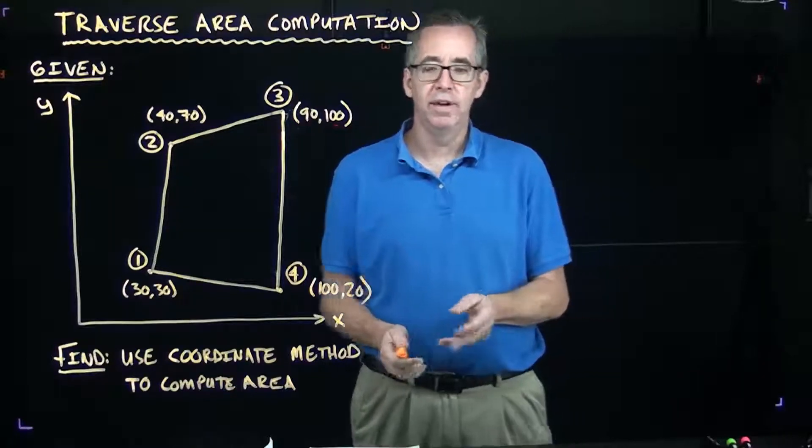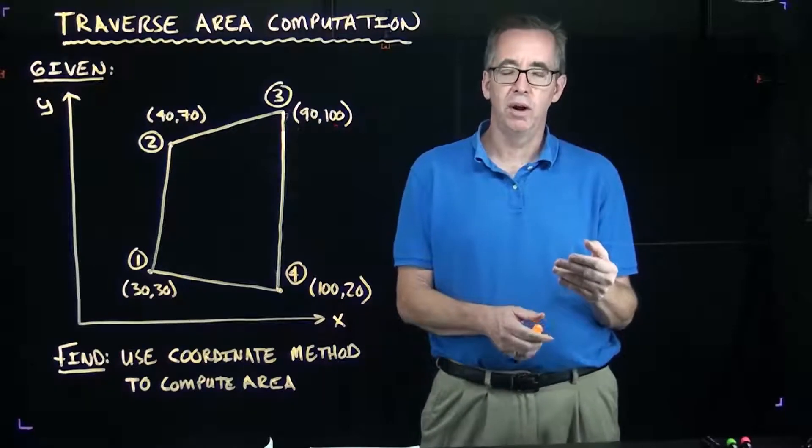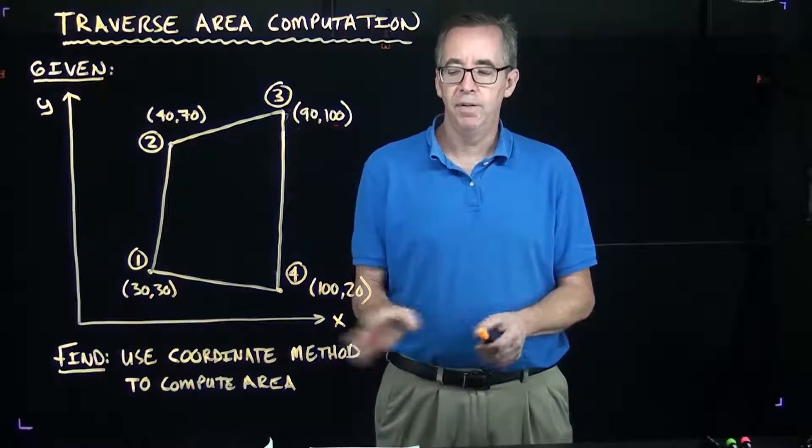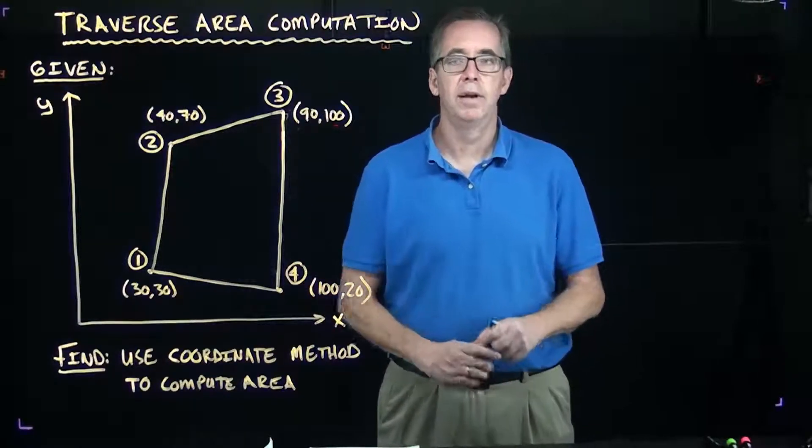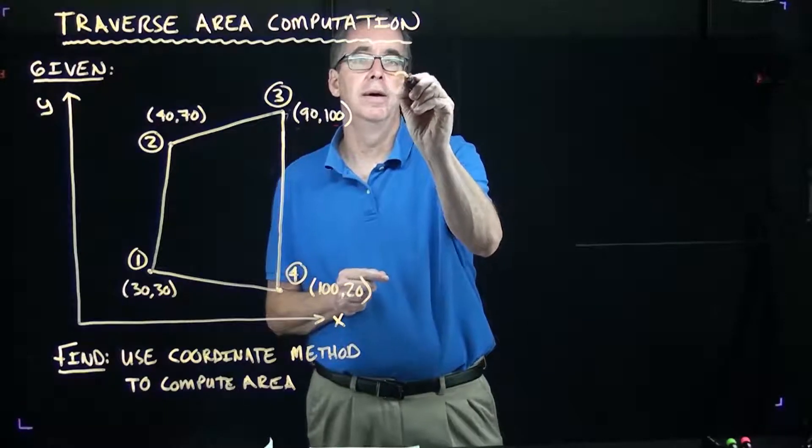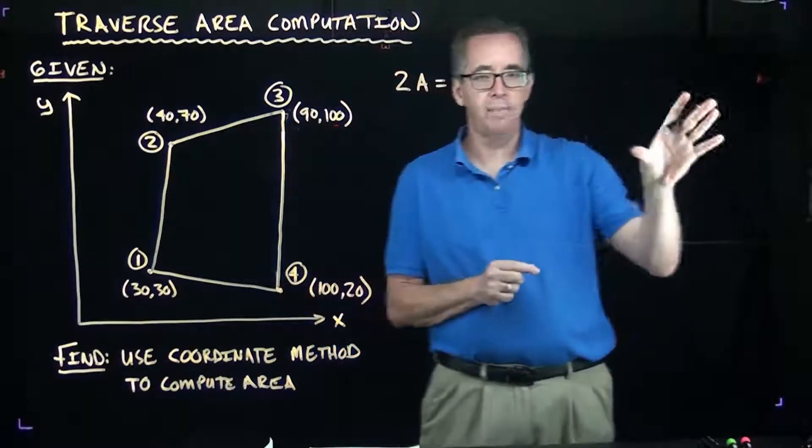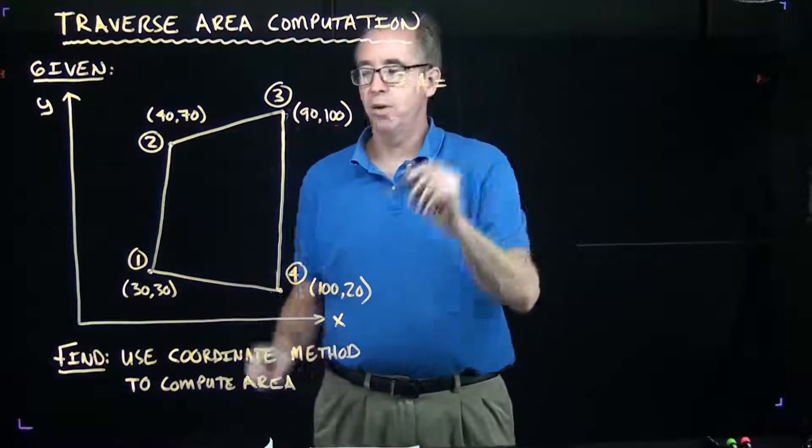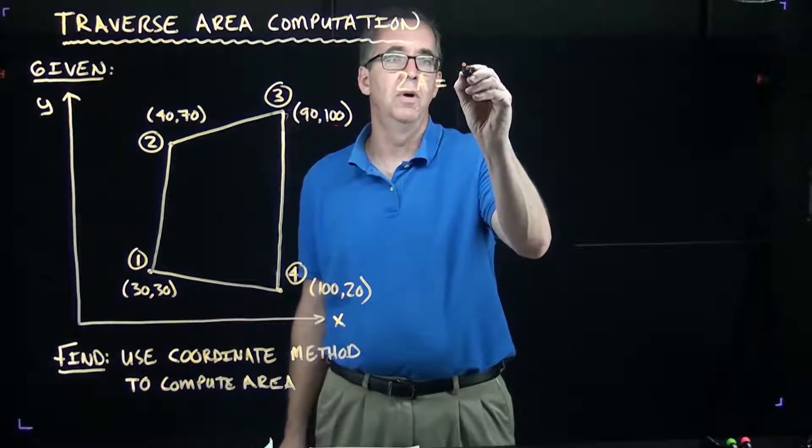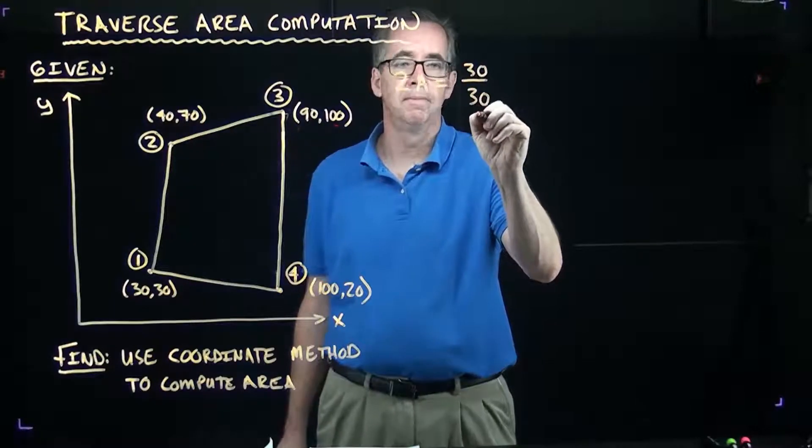Another approach to do this is called the coordinate area method. Sometimes it's also referred to as the alternative coordinate method. For this video, we're just going to refer to that as the coordinate method, and it basically says that twice the area is equal to, and then we set up these calculations where we're writing the X and Y coordinates at each point, as a fraction. So, we have the X of 0.1 of 30, the Y of 0.1 of 30.